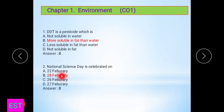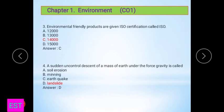The environmental friendly products are given ISO certification. That ISO certificate is about 14000. The C option is there. Next question: The sudden uncontrolled descent of a mass of earth under the force of gravity is called landslide.